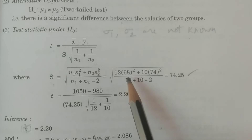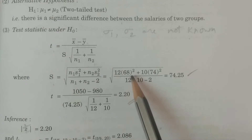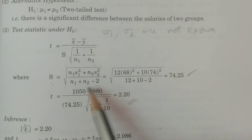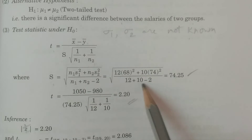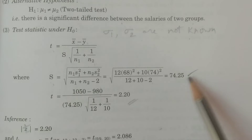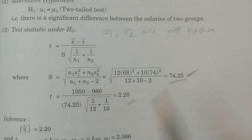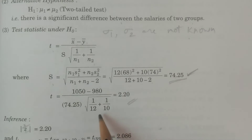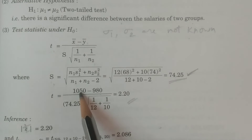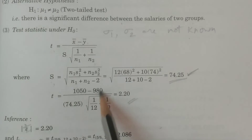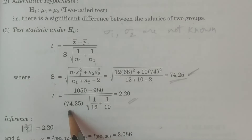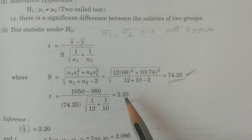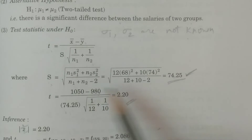We can calculate: n1 = 12, S1² = 68², plus n2, S2² = 74², divided by n1 + n2 − 2 = 12 + 10 − 2. The calculated value is 74.25. Now, t = (x̄1 − x̄2) / (S · √(1/n1 + 1/n2)). Substituting: (1050 − 980) / (74.25 · √(1/12 + 1/10)), t = 2.20.